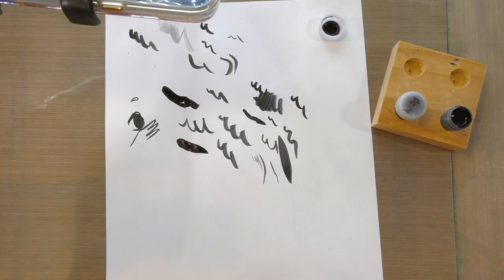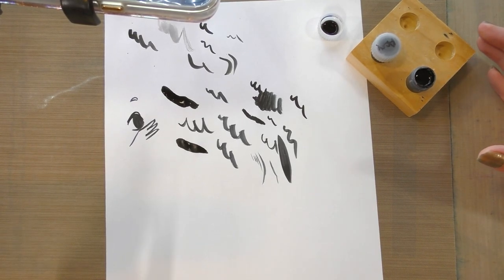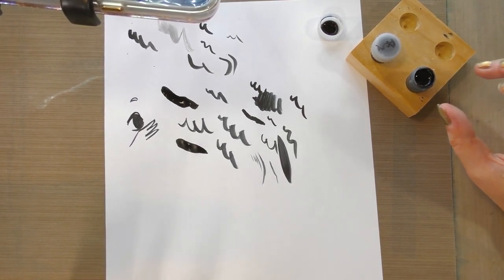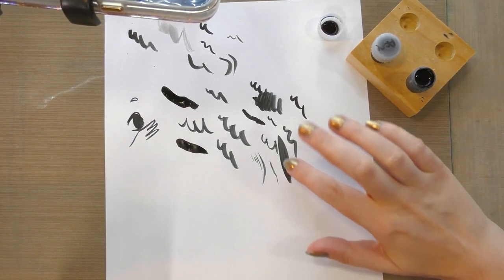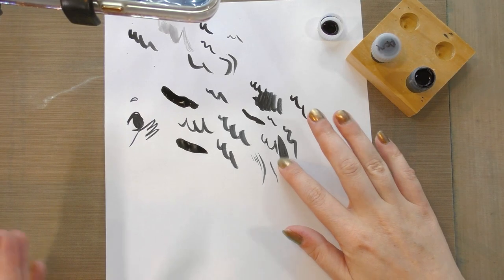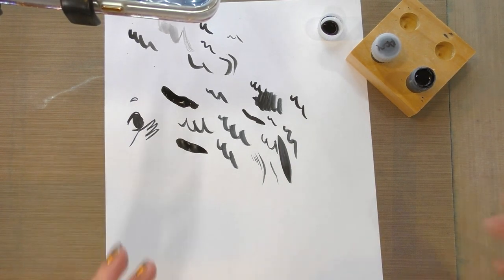Acrylic inks are going to be waterproof when they're dry, and they are a very liquid form of acrylic. Alcohol markers will actually dissolve the acrylic, the plasticizer in the acrylic, and make it smear all over the place, so you don't want to use acrylic inks with your Copic markers.